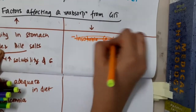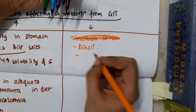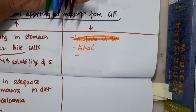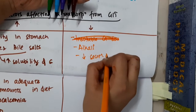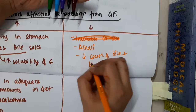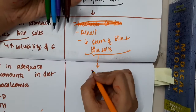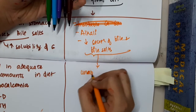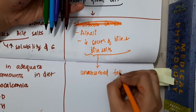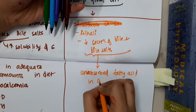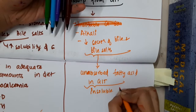Second, presence of alkalis — alkalis will cause saponification in the body, so presence of alkalis will decrease calcium reabsorption. Third, reduced secretion of bile and bile salts, because decreased bile and bile salts leads to unabsorbed fatty acids in the GIT, and these will form insoluble calcium soaps, thus decreasing calcium absorption.